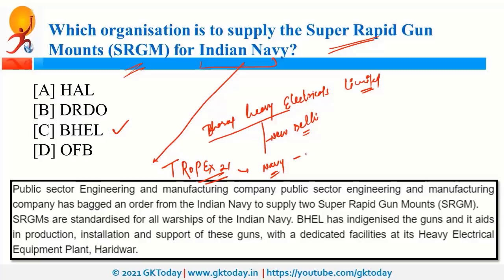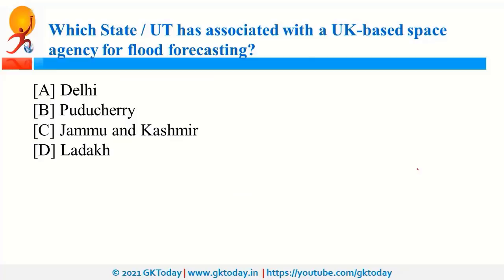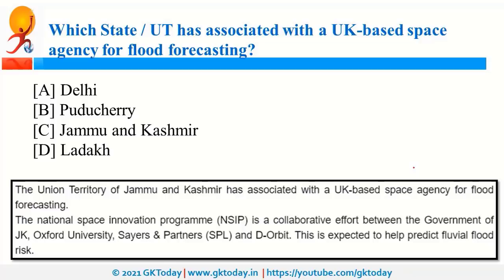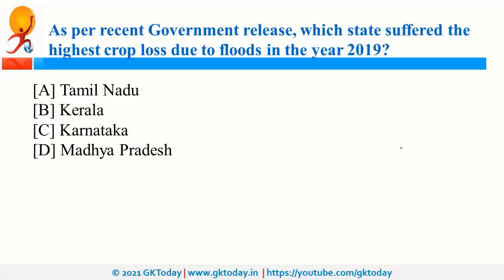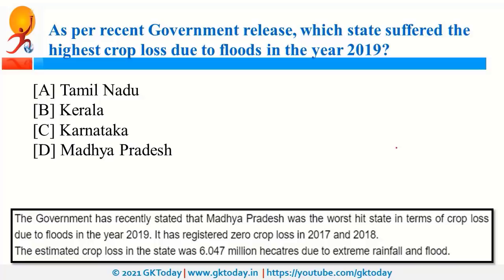Jammu and Kashmir has collaborated with a UK-based space agency for flood forecasting under the National Space Innovation Program. As per a recent government release, Madhya Pradesh suffered the highest crop loss due to floods in 2019. Madhya Pradesh was also in news because of the Jal Abhishekam initiative and a police museum on Chambal Dacoits.